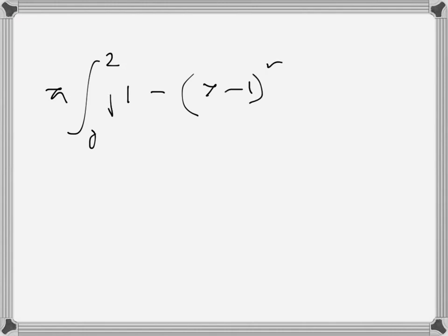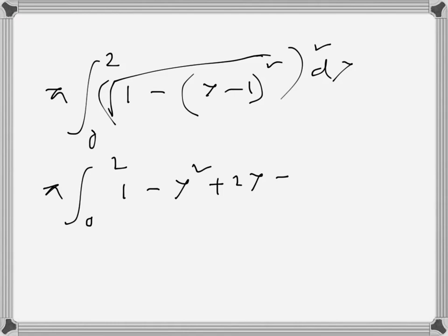The square root then again squared, so it's just there, from 0 to 2. So of course this is just the square, so this is 1 - (y² - 2y + 1), and dy here.